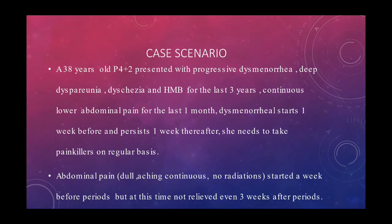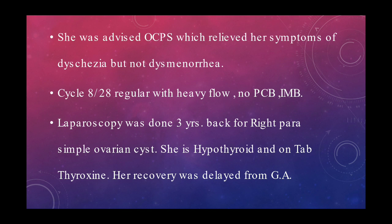The abdominal pain is dull, aching, and continuous with no radiation. It started a week before periods but at this time is not relieved even three weeks after. She was advised oral contraceptive pills (OCPs) which relieved her symptoms of dyschezia but not dysmenorrhoea. Her cycle is 8 by 28, regular, with heavy flow but no postmenopausal or intermenstrual bleeding. Laparoscopy was done three years back for a right-sided ovarian cyst. She is hypothyroid and on tablet thyroxine, and her recovery from general anaesthesia was delayed.